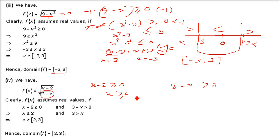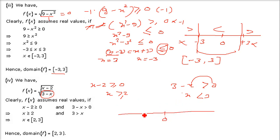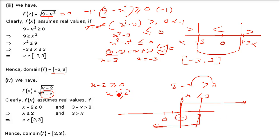So: x minus 2 ≥ 0 gives x ≥ 2. And 3 minus x > 0 gives x < 3. Now put both on the number line: x ≥ 2 means from 2 onwards including 2; x < 3 means everything less than 3. The common region between these two is from 2 to 3. Two is inclusive, so we put a square bracket. Three is not included — less than only, no equality — so we put a round bracket. The domain is [2, 3).